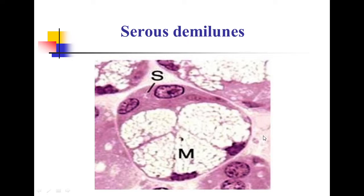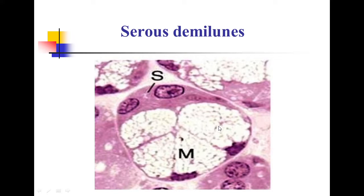In a mixed salivary gland, which contains both serous and mucous acini, you can see a peculiar structure called the serous demilune. It consists of a mucous acinus capped by cells of a serous acinus. This structure is called serous demilune and is seen in mixed salivary glands.